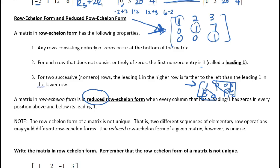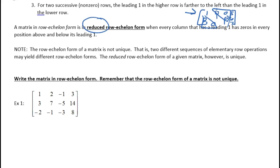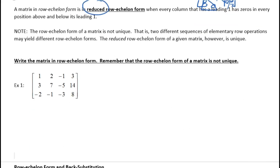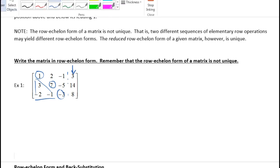We're going to look at taking a matrix and putting it in row echelon form — not the reduced one, just the basic row echelon where you have a diagonal of ones and the bottom triangle of zeros. Remember, this is not unique, so yours may look different than someone else's. My goal is to get all of these to be ones and make this triangle of three values zeros.